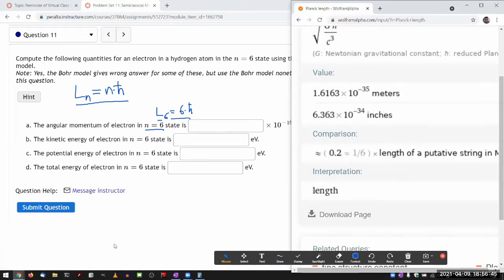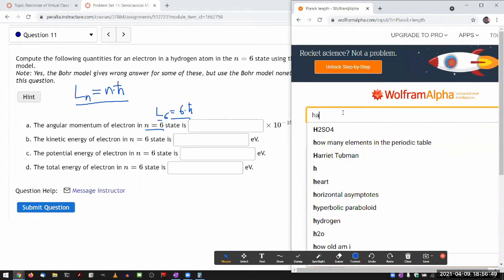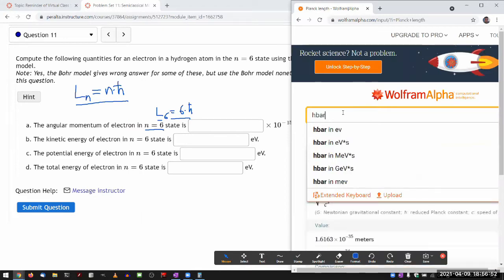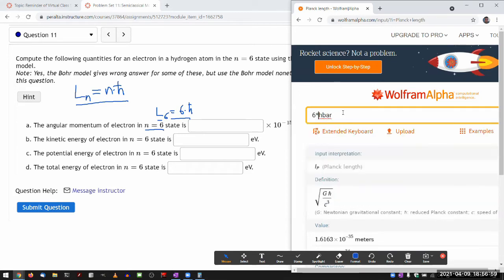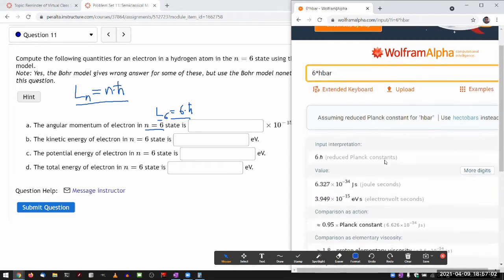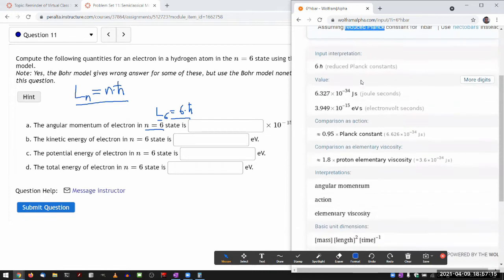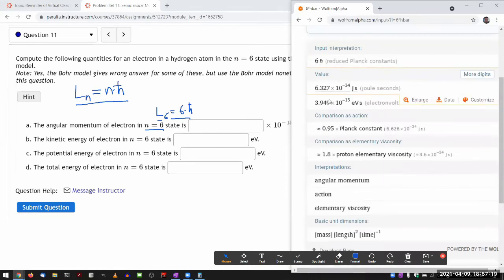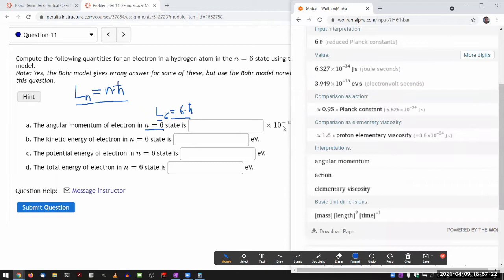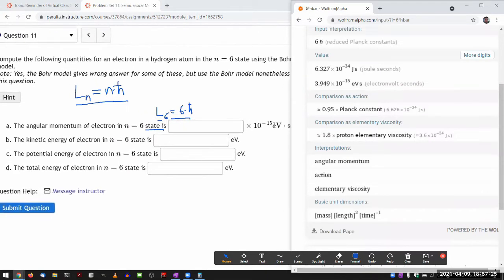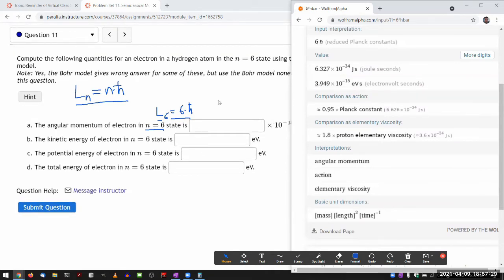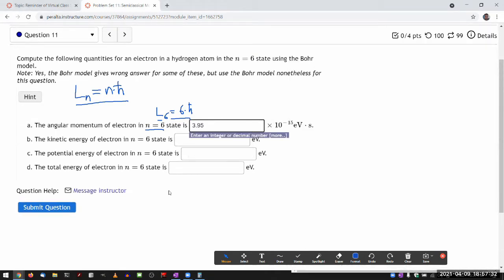Let me use Wolfram Alpha so I don't have to look up h-bar. Wolfram Alpha does understand h-bar. So 6 times h-bar, the common name for h-bar is what's called the reduced Planck constant. So 6 h-bar is 3.95 times 10 to the minus 15 electron volts second. That's exactly what I want.